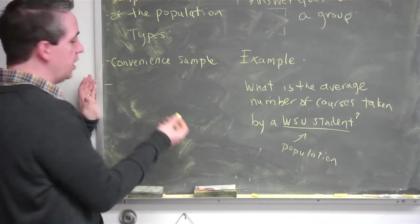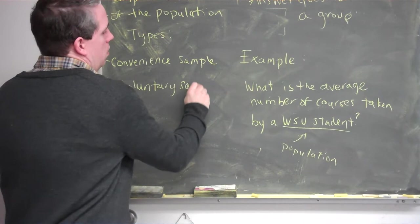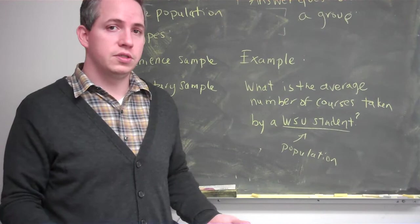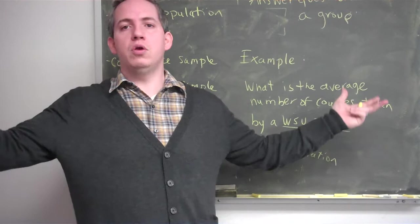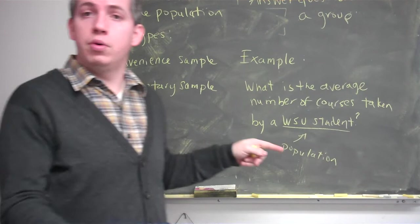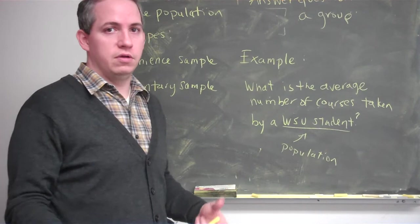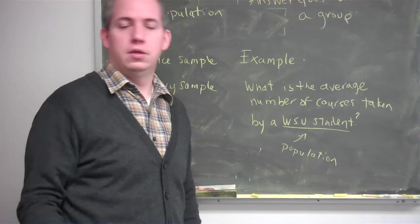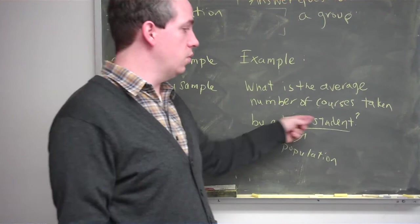Maybe I could do a voluntary sample instead. A voluntary sample is when I get people to volunteer — for example, I could go out in the middle of campus and yell, 'How many courses are you guys taking?' and only the people who volunteer their answer are included. Again, when people volunteer their answer, maybe I put it on Facebook, what I get is not really representative. Maybe people want to brag that they're taking tons of courses, so the answer we're getting may not be indicative of what is true about all Wayne State University students.